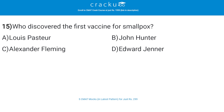Who discovered the first vaccine for smallpox? The correct answer is D, Edward Jenner. Vaccination began in 1796 when the English doctor Edward Jenner noticed that milkmaids who had gotten cowpox were protected from smallpox.